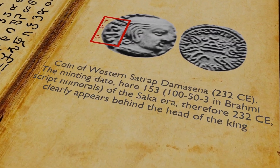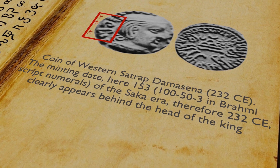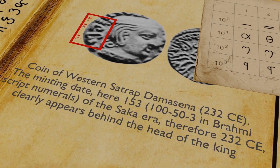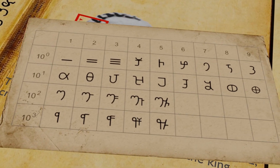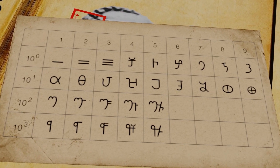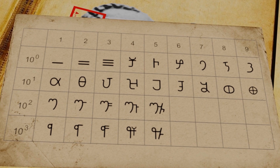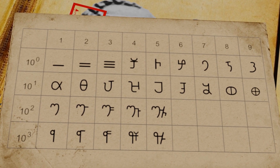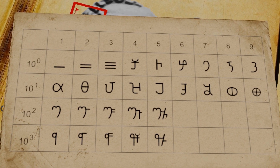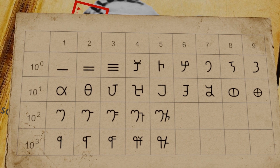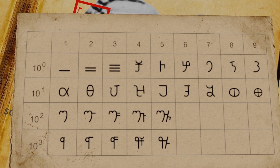The Brahmi numerals were used at the time of Emperor Ashoka. In those numerals, 1 was denoted with 1 vertical line, 2 with 2 vertical lines, 3 with 3 vertical lines — like Roman numerals. But 4, 5, 6, 7, 8, and 9 were different symbols.